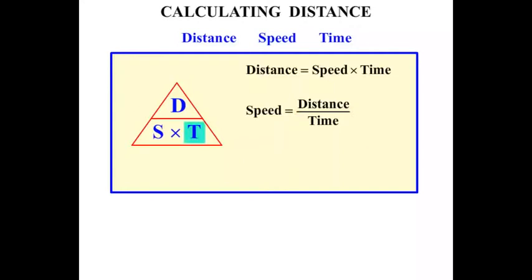The next one, T standing for Time, so Time equals... let's cover the T up. What are we left with? D over S, Distance over Speed. And again that over symbol is to divide.